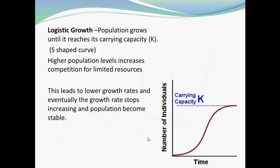Logistic growth is where a population grows until it reaches its carrying capacity, identified by the capital letter K. On a graph this makes an S-shaped curve. Higher population levels increase competition for limited resources, leading to lower growth rates, and eventually the growth rate stops and the population becomes stable. The population starts, grows, then tops off and remains there as resources allow — that's the maximum population the environment can handle.